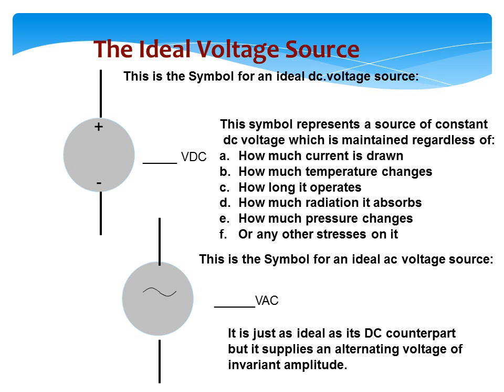This is a symbol for an ideal voltage source. This symbol represents a source of constant DC voltage, which is maintained regardless of: A) how much current is drawn, B) how much temperature changes, C) how long it operates, D) how much radiation it absorbs, E) how much pressure changes, or F) any other stresses on it.